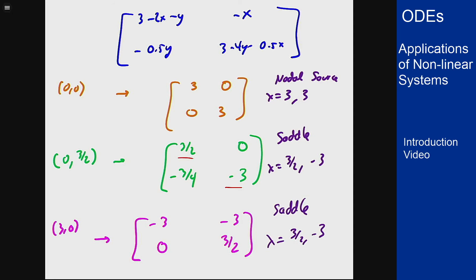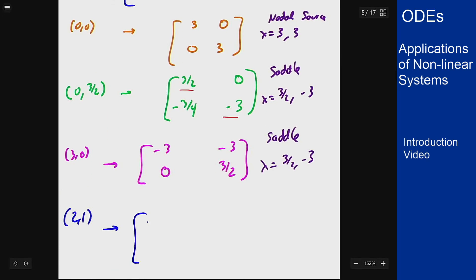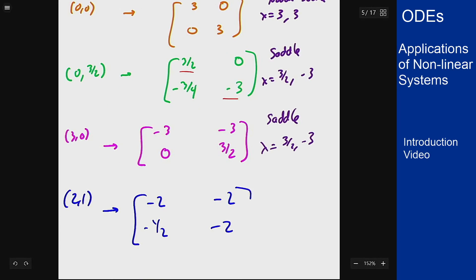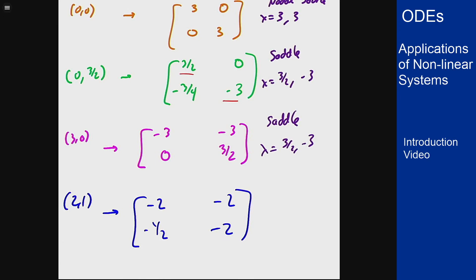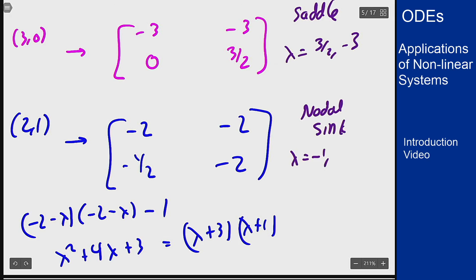Then we get the one point in the middle at (2, 1). So at (2, 1): 3 minus 4 minus 1 is -2, -2 here as well, one half y so -1/2, and 3 minus 4 minus 1 is again -2. This is going to take a little more work because it's not triangular. We can find the eigenvalues here: I get (-2 minus lambda)(-2 minus lambda) minus (1/2)(2). So lambda squared plus 4 lambda plus 4 minus 1 is plus 3. This is (lambda plus 3)(lambda plus 1). So this is a nodal sink with lambda equals -1 and -3.